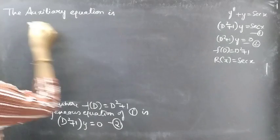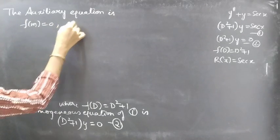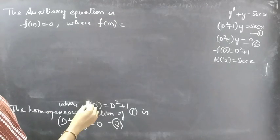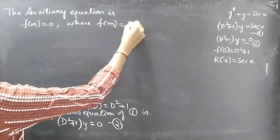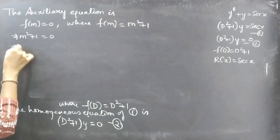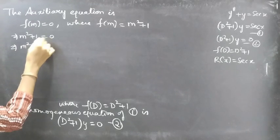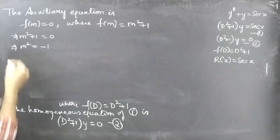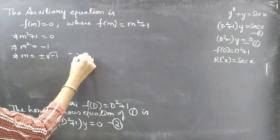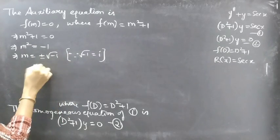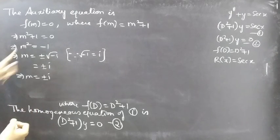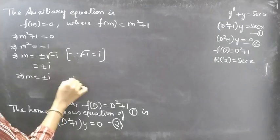The auxiliary equation is f(m) = 0. Since f(D) = D² + 1, we replace D with m to get f(m) = m² + 1 = 0. Solving: m² = −1, so m = ±√(−1) = ±i. Therefore the roots of the auxiliary equation are m = ±i.